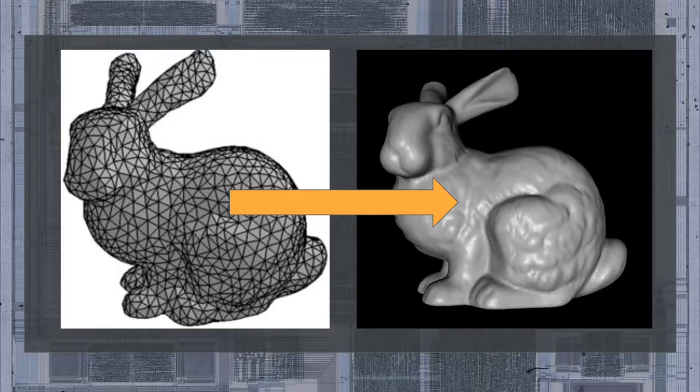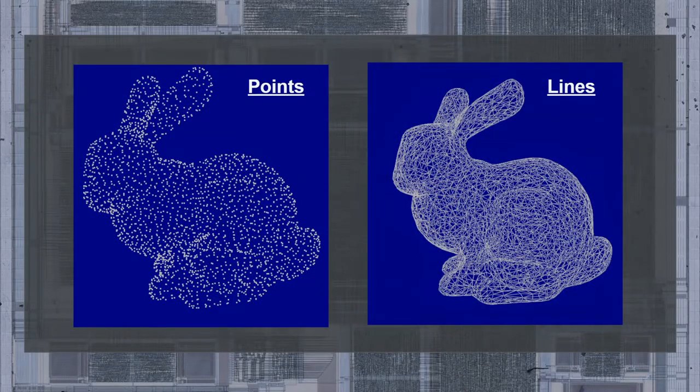But have you ever thought about points and lines? Here's an example of the same model using a cloud of points and in a mesh wireframe mode. Point clouds are especially useful when visualizing 3D scanning data, and wireframe lines are useful when visualizing the topology of meshes, or what the underlying triangle makeup looks like. Both points and lines are important to draw, but they're not triangles.